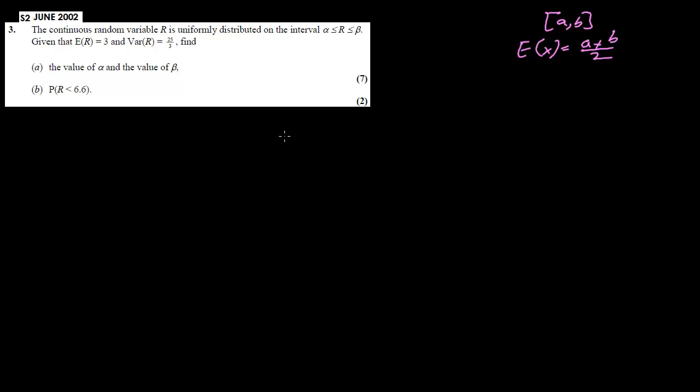The continuous random variable is uniformly distributed from alpha to beta — this is given. For a continuous uniform distribution from a to b, the expected value is (a + b)/2 by symmetry, and the variance is (b − a)² / 12.